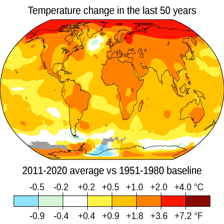Changes of the land surface: the rate of global tree cover loss has approximately doubled since 2001, to an annual loss approaching an area the size of Italy. Humans change the Earth's surface mainly to create more agricultural land. Today, agriculture takes up 34% of Earth's land area, while 26% is forests and 30% is uninhabitable (glaciers, deserts, etc.). The amount of forested land continues to decrease, largely due to conversion to cropland in the tropics. The main causes of deforestation are: permanent land use change to agricultural land producing products such as beef and palm oil (27%), logging to produce forestry or forest products (26%), and short-term shifting cultivation (24%).